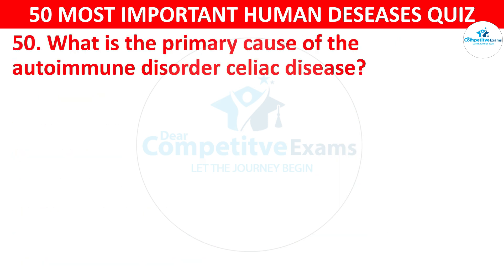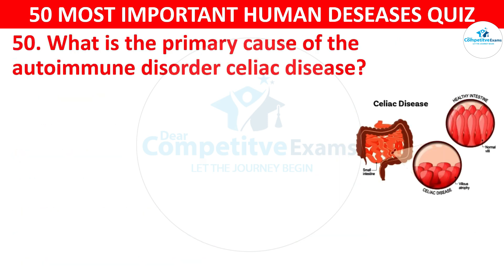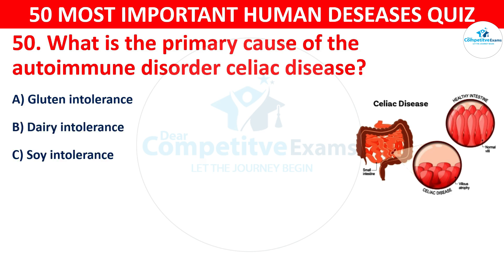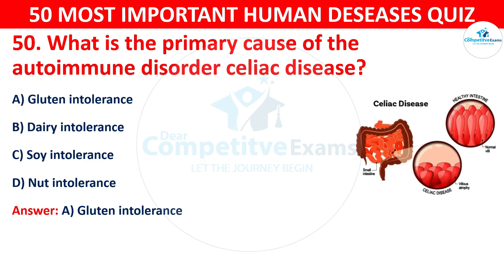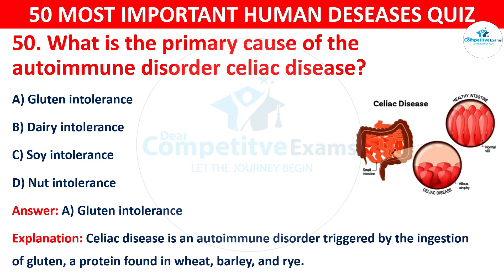Question 50: What is the primary cause of the autoimmune disorder celiac disease? Your options are: A) Gluten intolerance, B) Dairy intolerance, C) Soy intolerance, or D) Nut intolerance. The correct answer is A — gluten intolerance. Celiac disease is an autoimmune disorder triggered by the ingestion of gluten, a protein found in wheat, barley, and rye.